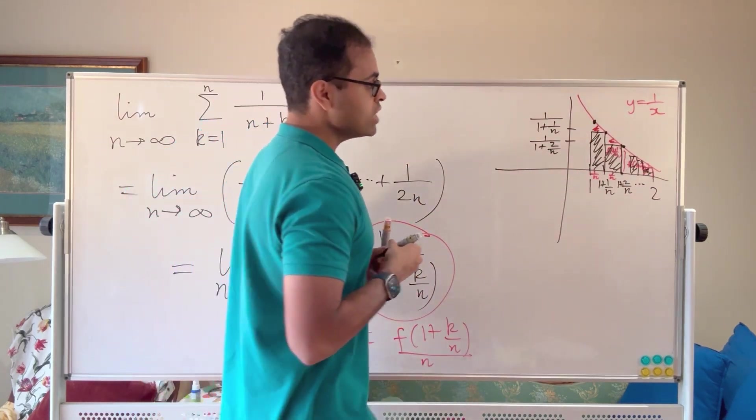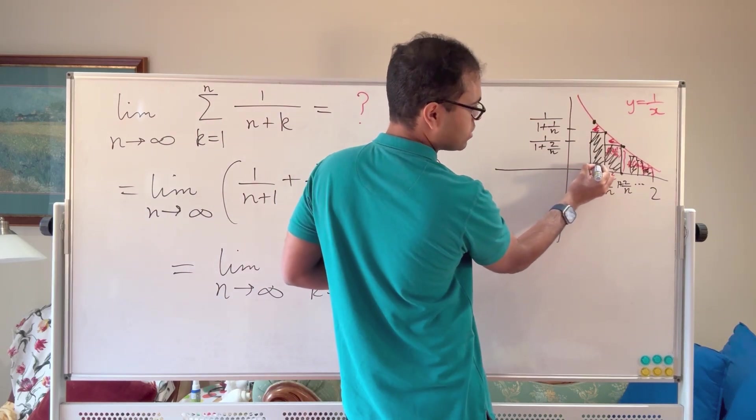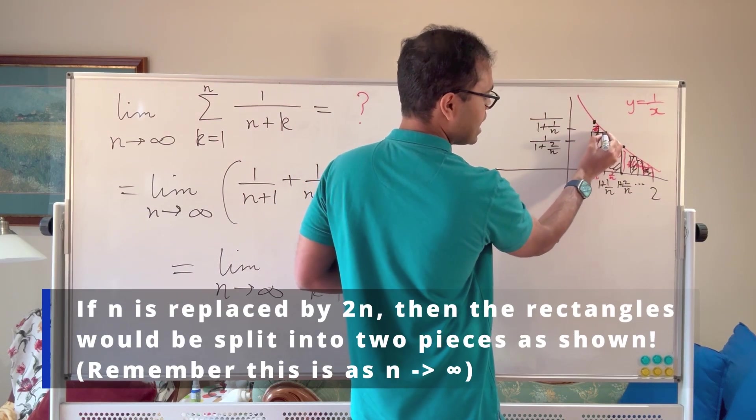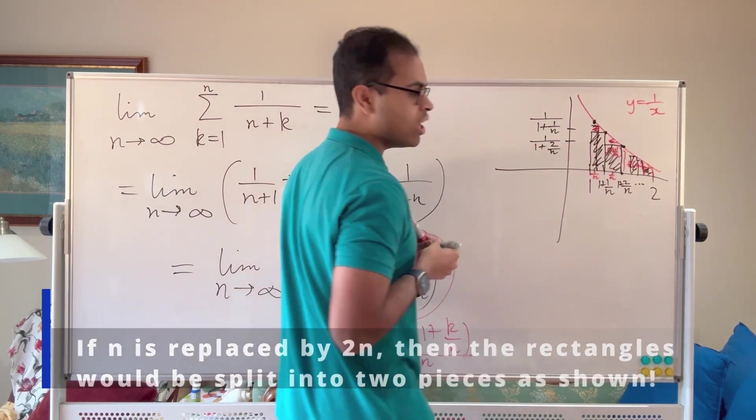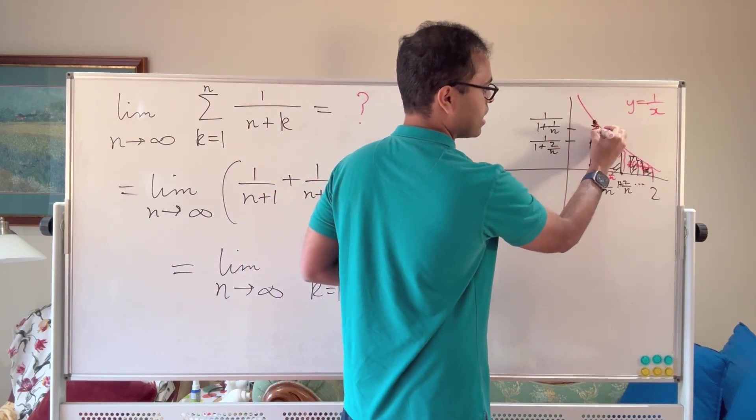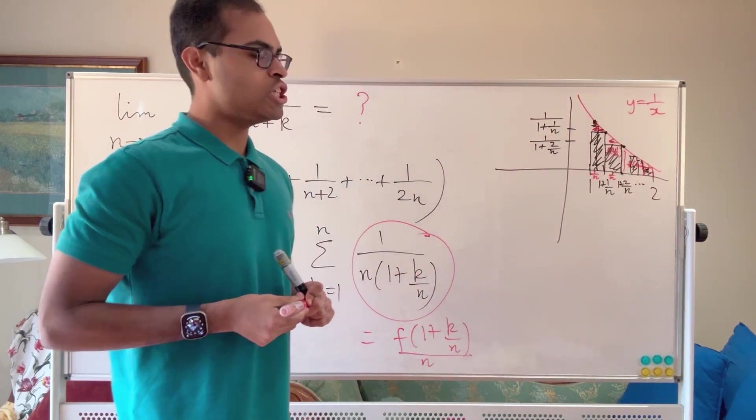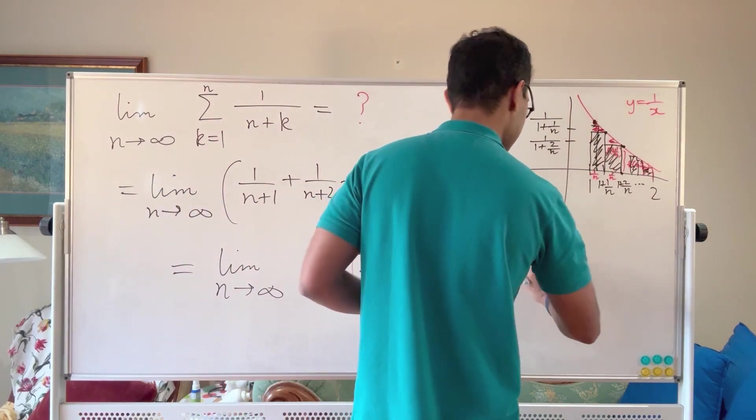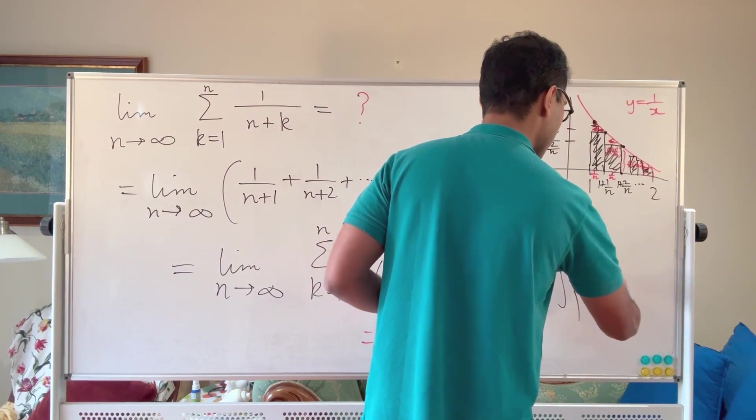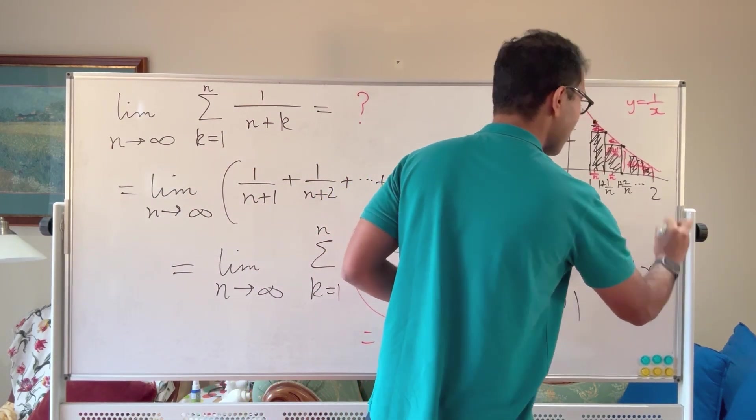But once our rectangles get thinner, like we split this rectangle into two pieces, then the excess area is going to get a lot smaller. Instead, the excess area is going to be this area here. So you kind of get the picture, but the point is this is actually the area under the graph from 1 to 2 of 1 over x, which is what we call the definite integral.